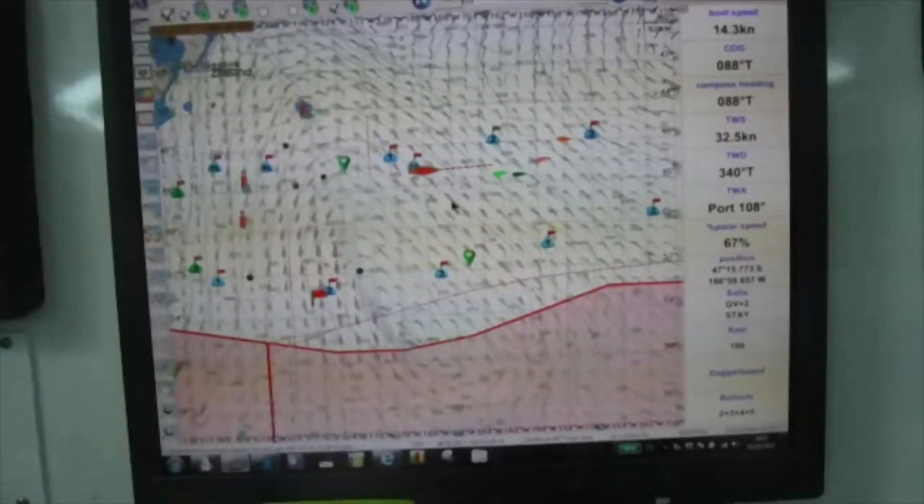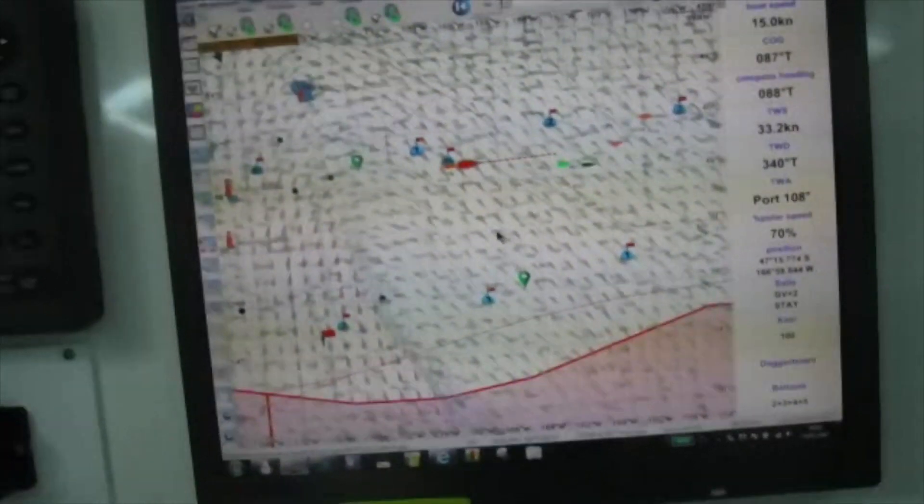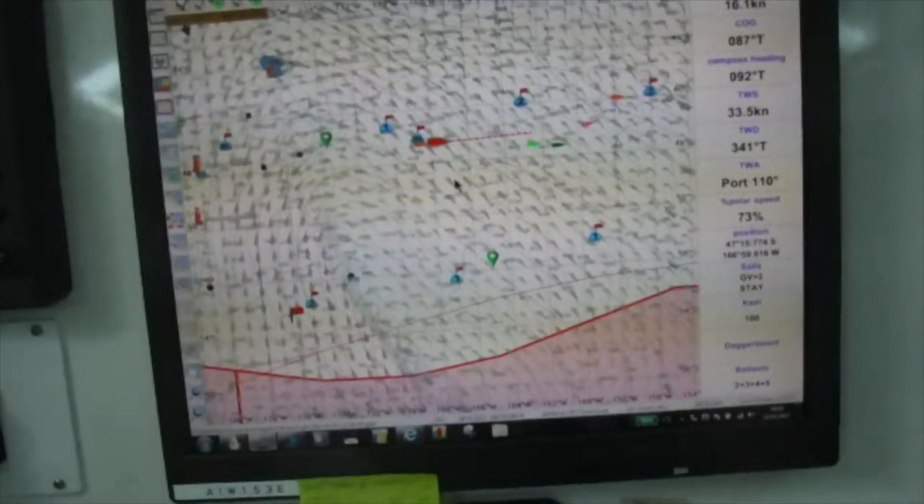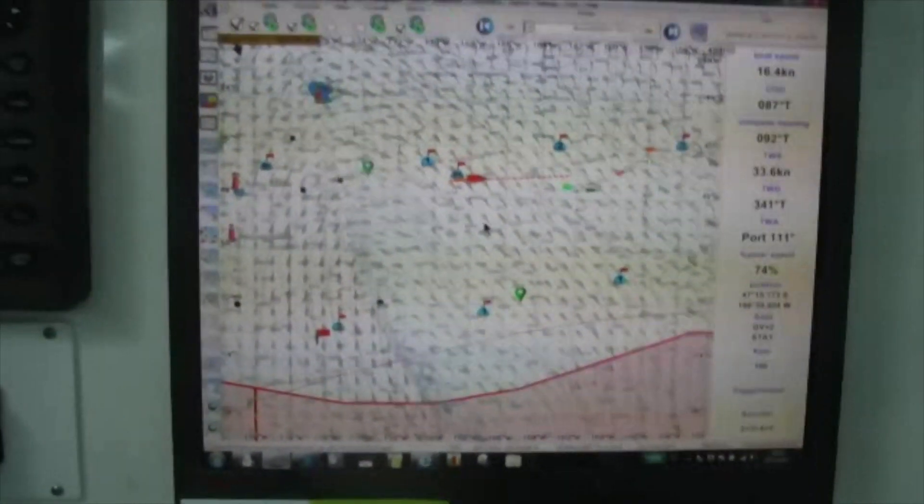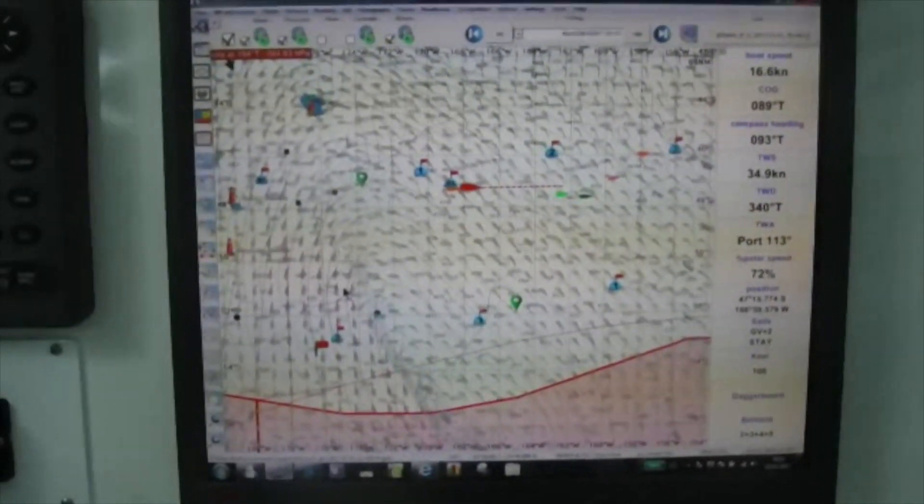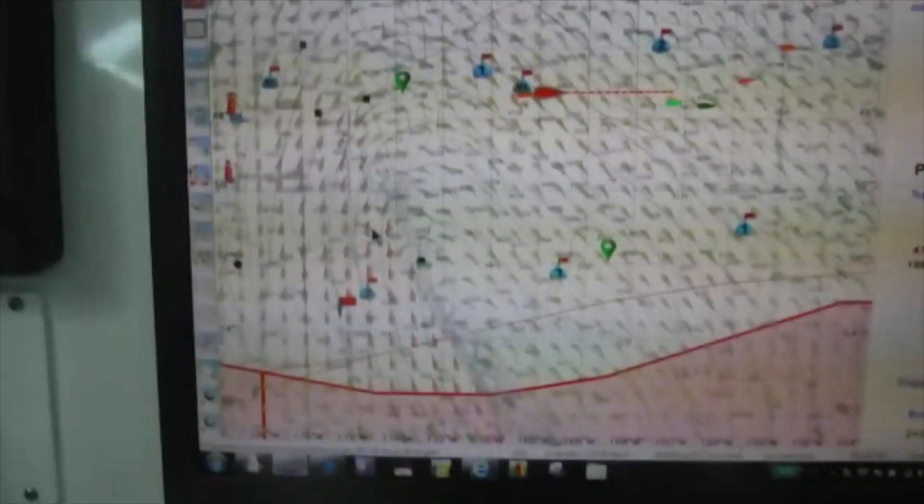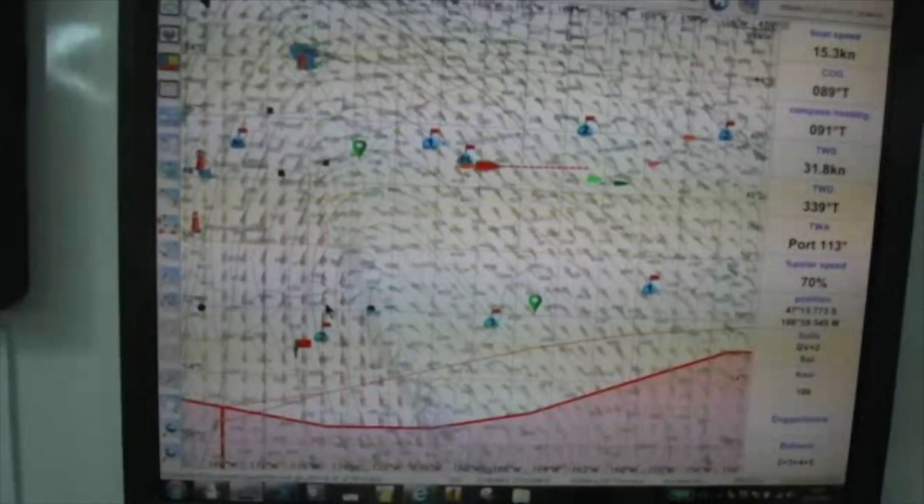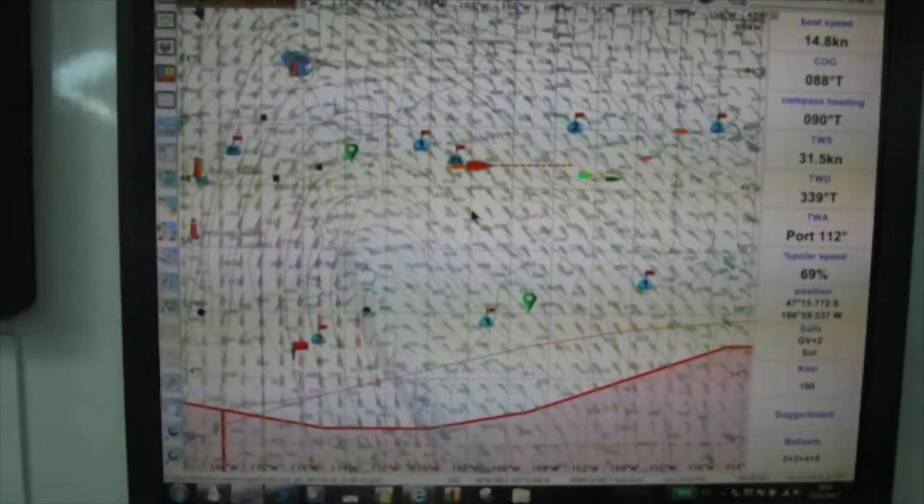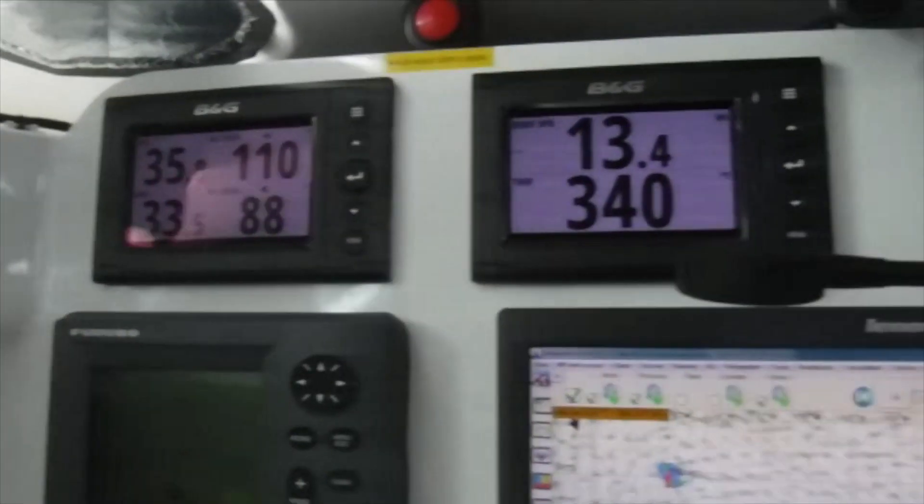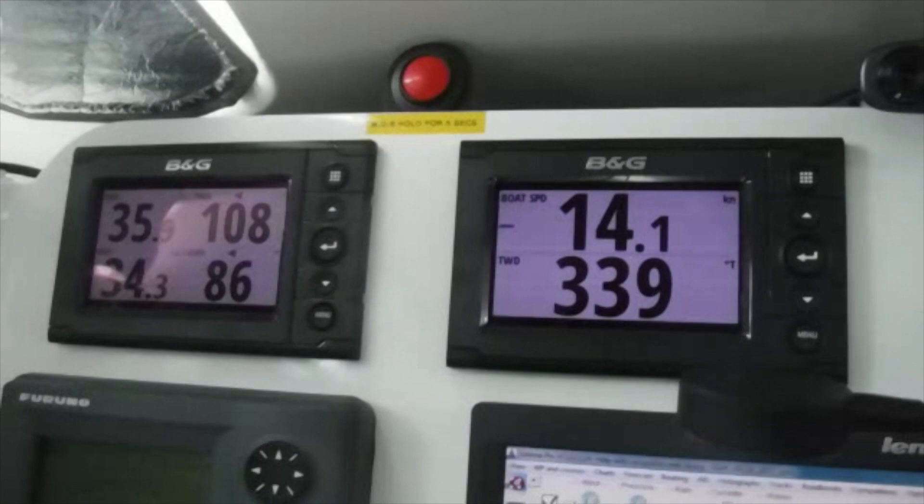And so where we are now with these wind barbs. This shows three full barbs plus a half barb right where the cursor is. That's 35 knots. On the far side of the storm it's much stronger, 40 knots of wind right there. We've had 40 also. 35 to 40 is what we have right now. You can see up there on top left 35 knots of wind, and our boat speed is 13 knots.